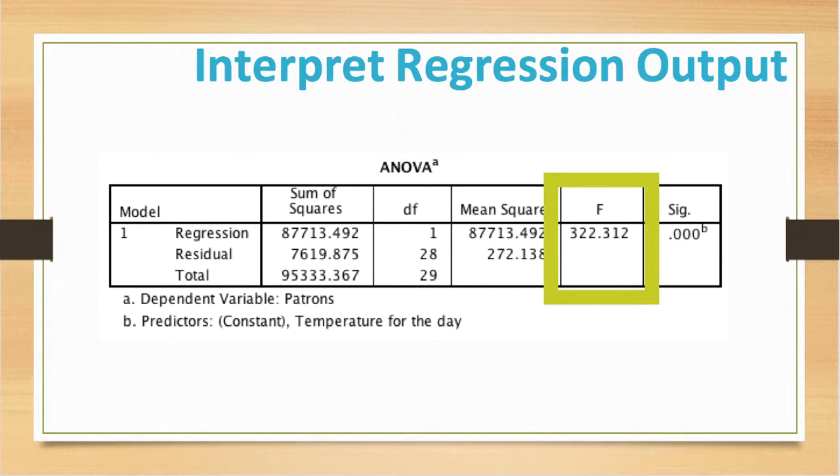The most important part of the table is the f-ratio and the associated significance of that f-ratio. The f-ratio tells us how much variability the model can explain relative to how much it can't explain. It's basically the ratio of how good the model is compared to how bad it is, and a high number is a very important component.